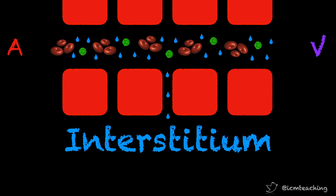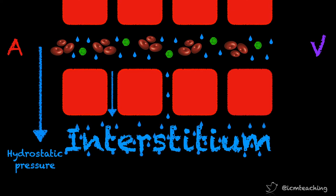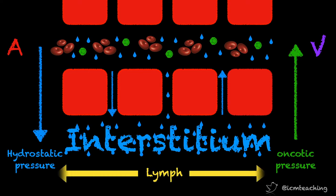We were taught that there is a hydrostatic pressure gradient from the capillaries to the interstitium, down which fluid leaks from the capillaries to the interstitium at the arterial side of the circulation, and an opposing colloid osmotic pressure gradient that draws fluid back into the vessels at the venous end. Any excess fluid is returned to the circulation in the great veins by the lymphatics.